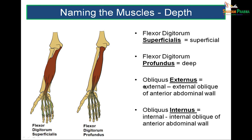Naming muscles based on how deep they lie: in the forearm there are two muscles — both flexor digitorum — but one is superficially placed and the other deeply placed: flexor digitorum superficialis and flexor digitorum profundus. Similarly in the anterior abdominal wall: obliquus externus (external oblique) and obliquus internus (internal oblique). Externus is on the outer side, internus on the inner side — thus muscles can be named as superficial or profundus, externus or internus.